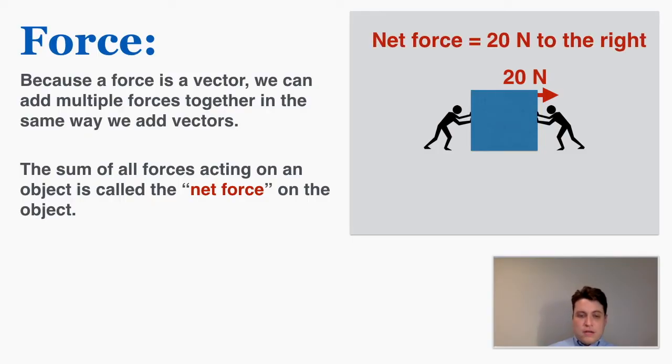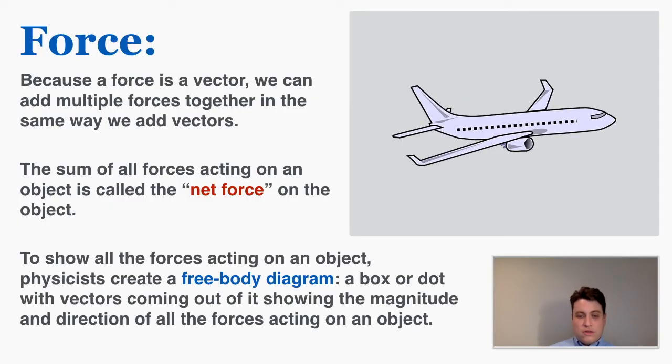To show all the forces acting on an object, physicists create a free body diagram: a box or dot with vectors coming out of it showing the magnitude and direction of all the forces acting on an object.